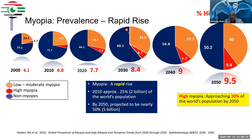The high myopia prevalence has also increased — it was around 2 percent only in the year 2000, and it is expected to be around 10 percent by 2050, which is approximately hundreds of millions of people affected by the progression of myopia, or what we call pathological myopia.